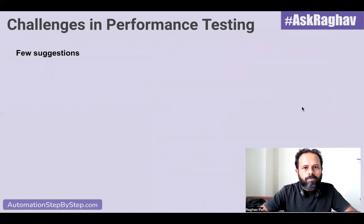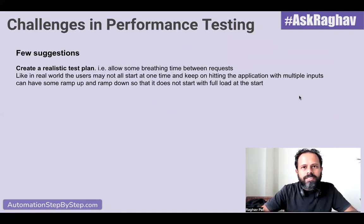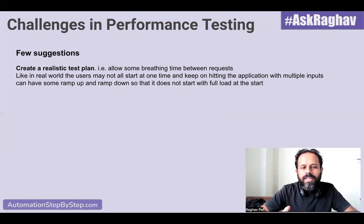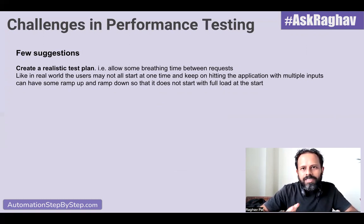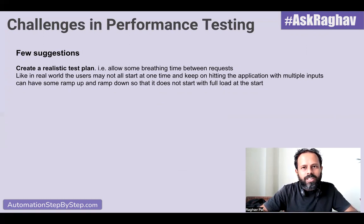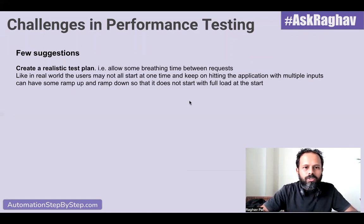Here are a few suggestions for performance testing. Always create a realistic performance test plan. By realistic, I mean allow some breathing time between requests — allow some gaps. In the real world, users will not be using the application like a robot or a machine. They will be doing some activity with some idle time in between. Similarly, allow breathing time between your requests. Performance testing tools like Gatling or JMeter have options to allow this breathing time. You can also have some ramp-up and ramp-down time in your requests.